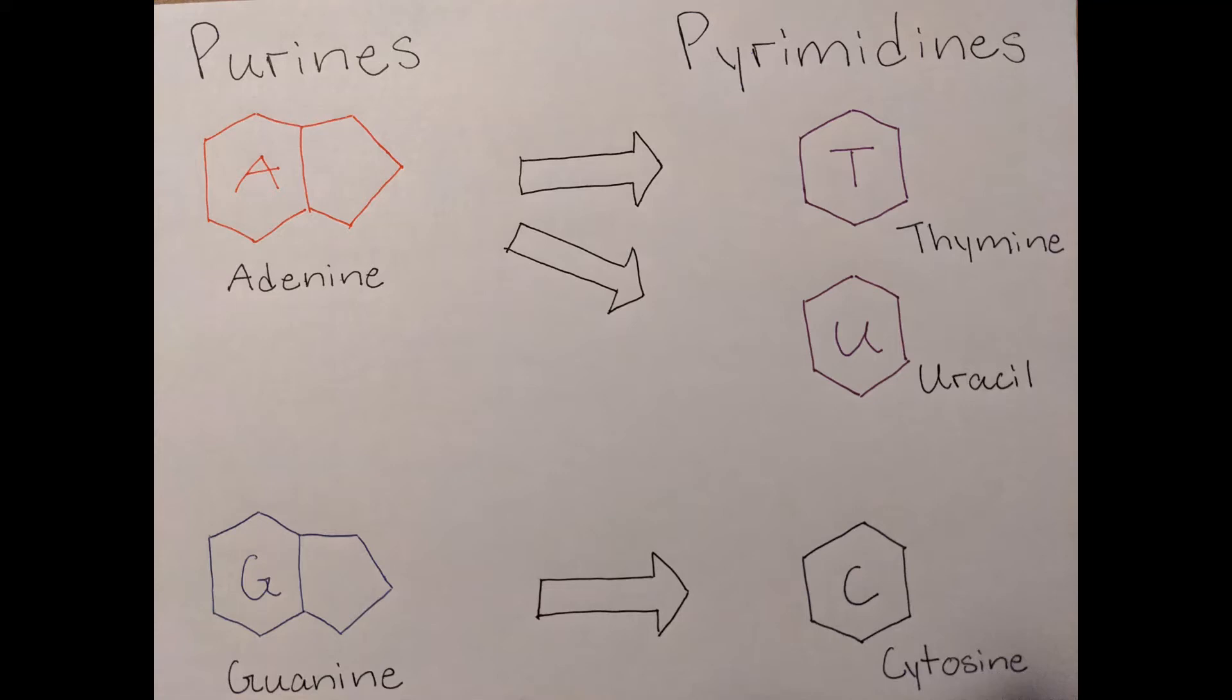Purines are adenine and guanine, while pyrimidines are thymine, cytosine, and uracil. Uracil replaces thymine in the RNA.